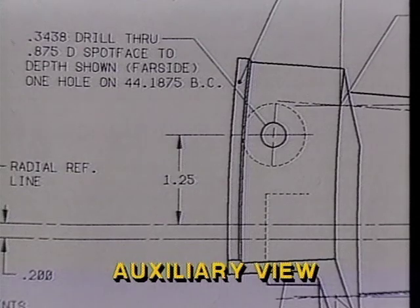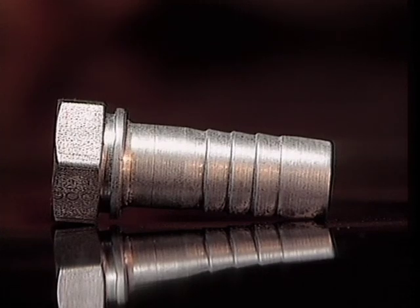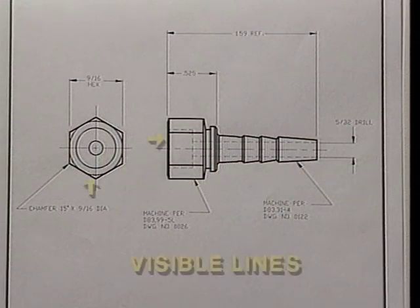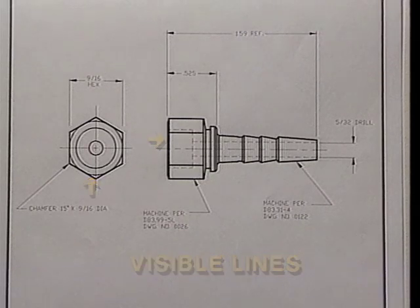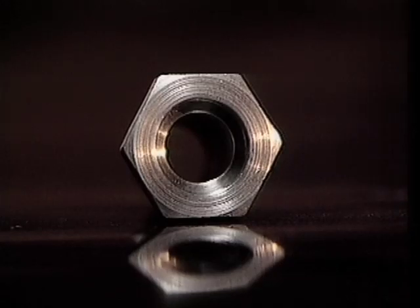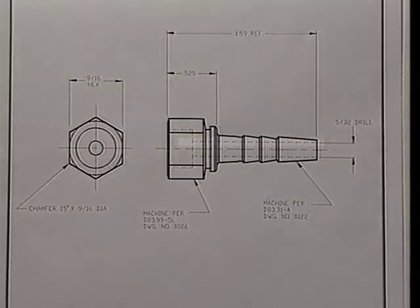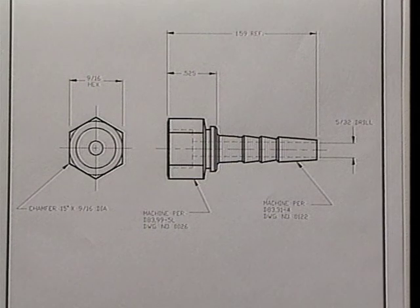Many edges of a part are visible — you can see them. But looking only at one view, there are other edges and features you can't see; they are invisible. The edges you can see are shown on a blueprint as full, heavy lines called visible or object lines. Edges that cannot be seen from the outside of the object are called invisible lines. The inside edges not visible from the front view are indicated on the drawing by a series of small dashes, called invisible lines or hidden lines. Whether the object is straight, curved, or circular, hidden or invisible edges are generally represented by these invisible lines.